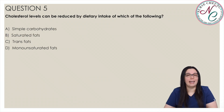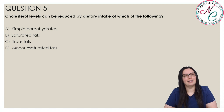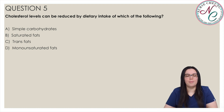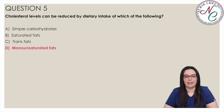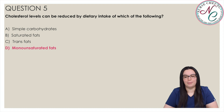Question 5: Cholesterol levels can be reduced by dietary intake of which of the following? Is it A) Simple Carbohydrates, B) Saturated Fats, C) Trans Fats, or D) Monounsaturated Fats? The correct answer is D) Monounsaturated Fats. Cholesterol levels can be reduced by dietary intake of monounsaturated fats such as avocados and olive oil. Choices B and C are incorrect because cholesterol levels are increased by both saturated fats and trans fats.